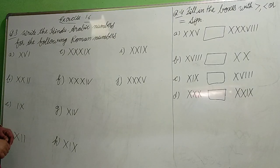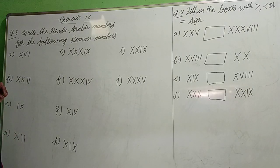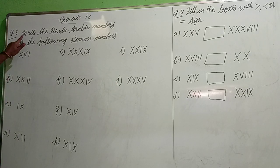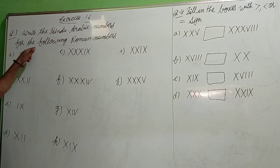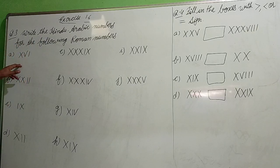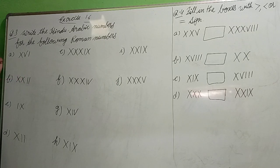Dear student, exercise 1.6, question 1st and 2nd we have already discussed. Now we will start question 3rd. Question 3rd says: write the Hindu Arabic numbers for the following Roman numbers. Roman numbers are given. Hindu Arabic means counting numbers.